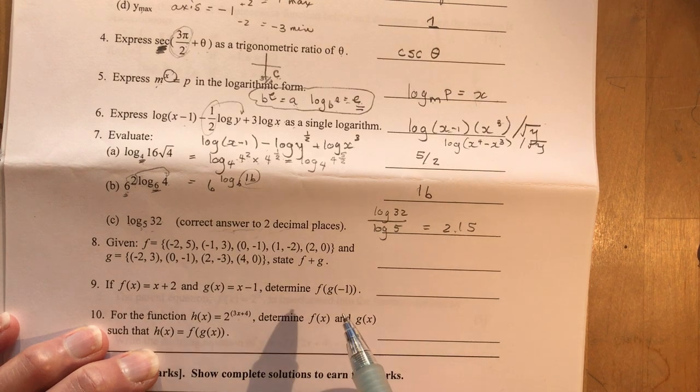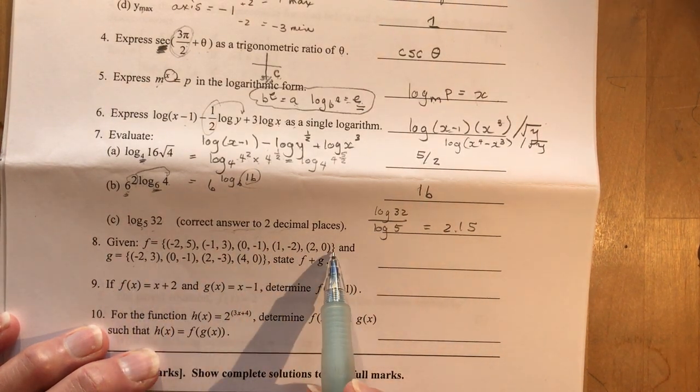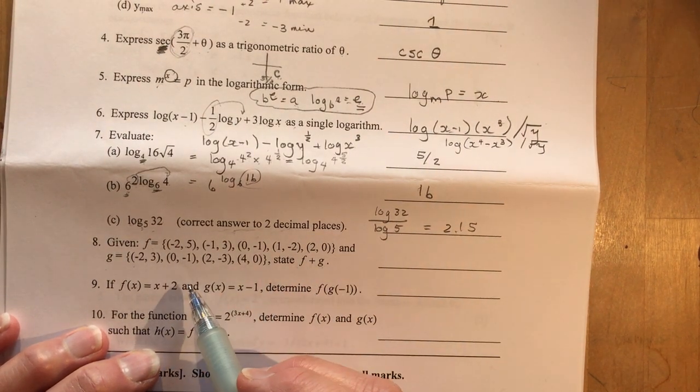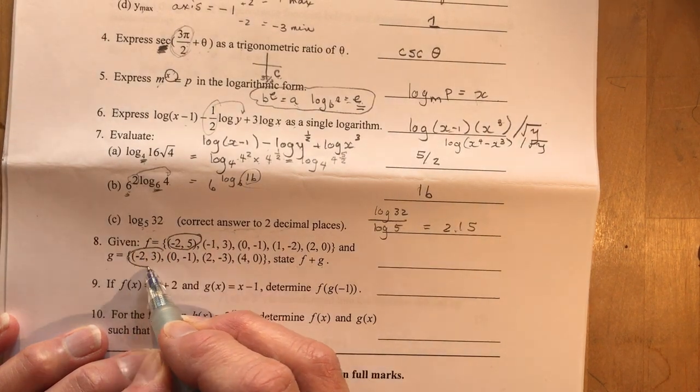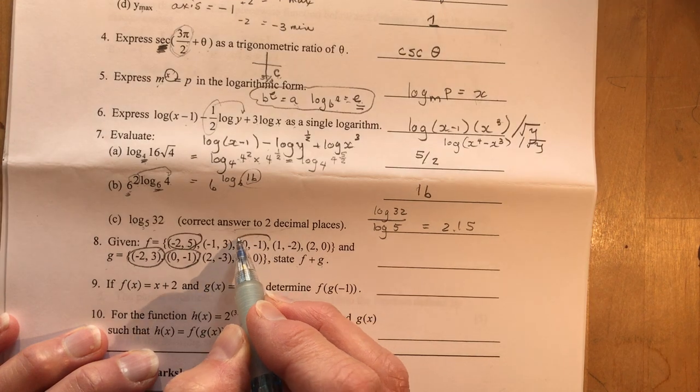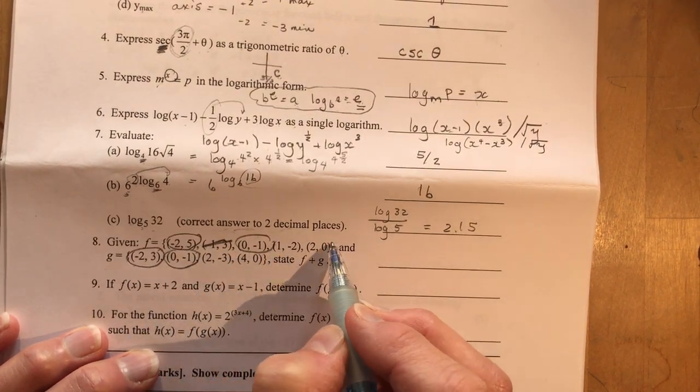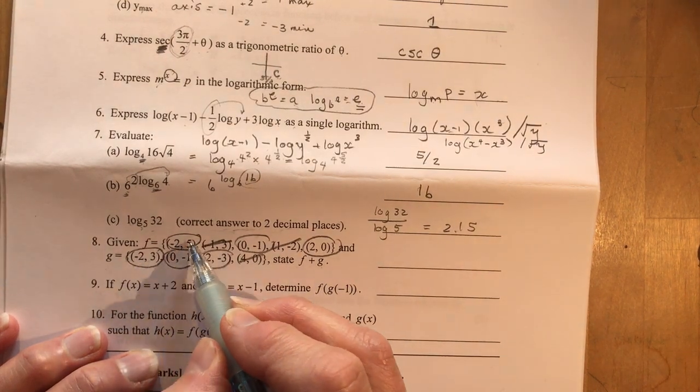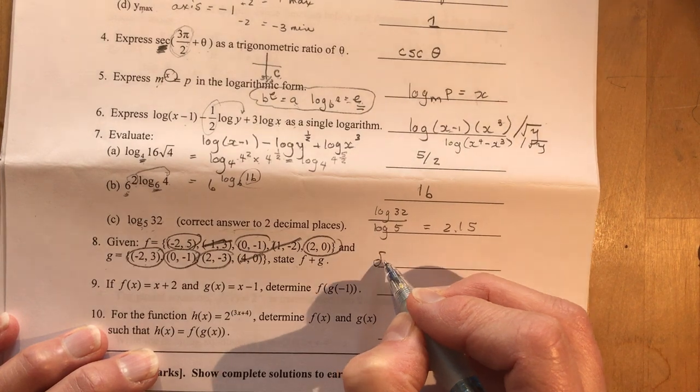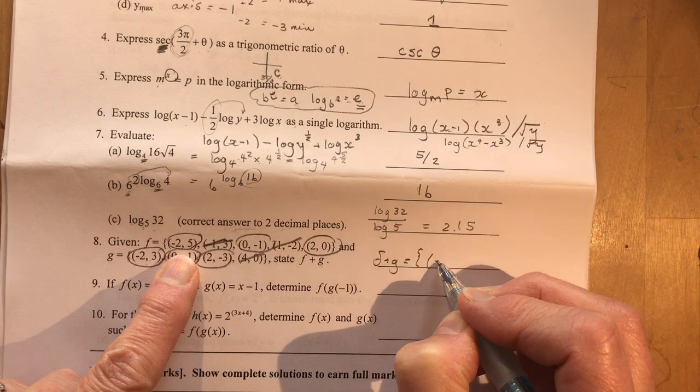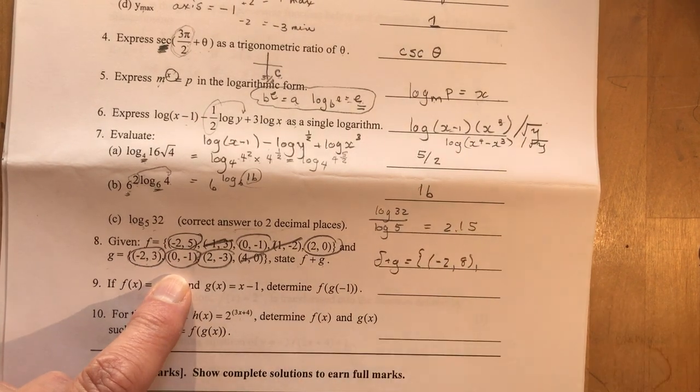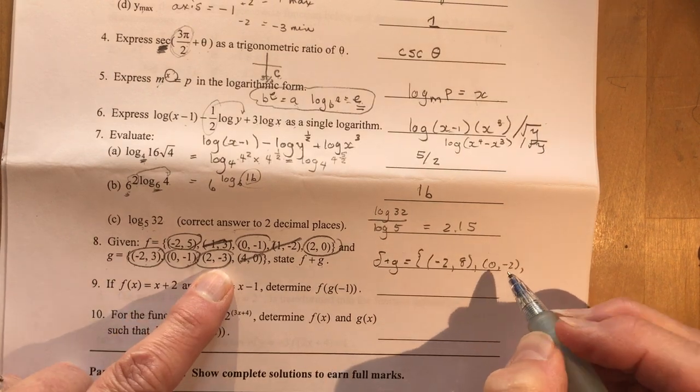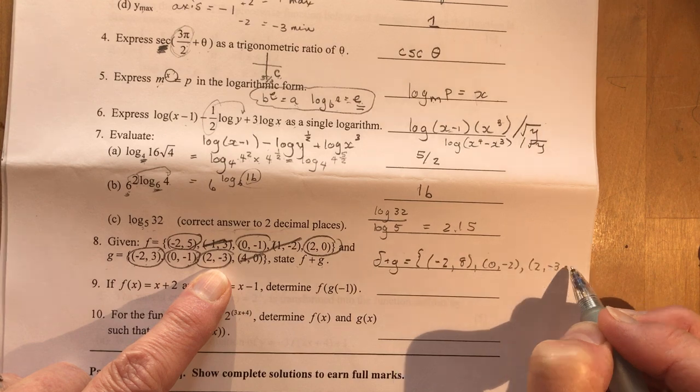Okay. Moving on to bigger things here. We have number 8 given this. So F equals this set of coordinates and G is this. What's F plus G? So you know that in order to add them together you have to have the same X coordinates. So this one and this one we can add. This one has a 0 and this one has a 0. There's none for that one. We have a 2 0 and a 2 minus 3. And this one and this one we can't use. So I just have to add the Y coordinates of this. So I'm going to say F plus G equals curly bracket. I had minus 2 and I add 5 and 3. It gives me 8. This is a nice easy mark, isn't it? And 0 and minus 1, 0 and minus 1. So that's going to be 0 and minus 2. And 2 and minus 3.